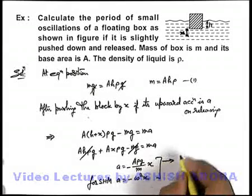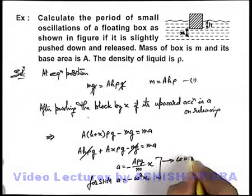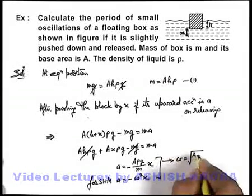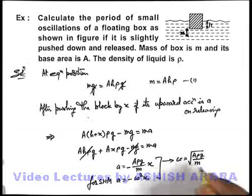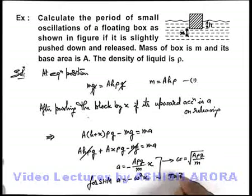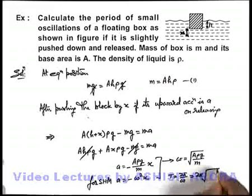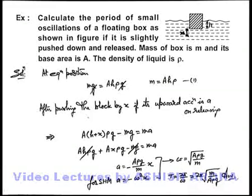Comparing the two we'll get the angular frequency of oscillation as root of Aρg by m. Hence time period of oscillation is 2π by omega which can be written as 2π root of m upon Aρg. That'll be the answer to this problem.